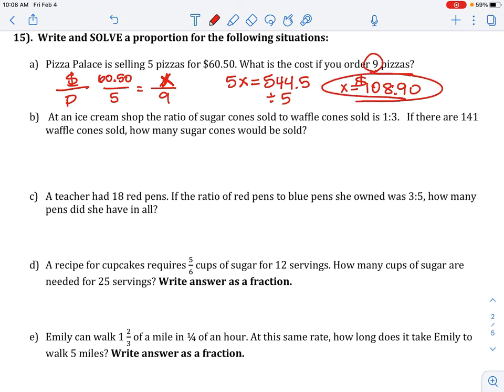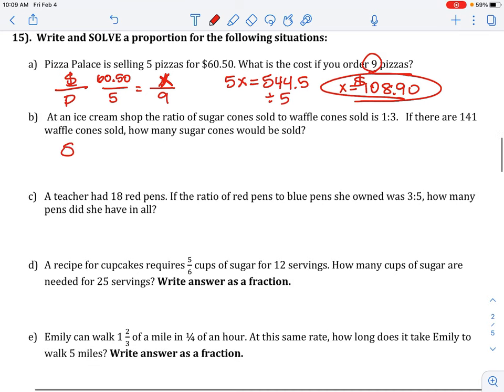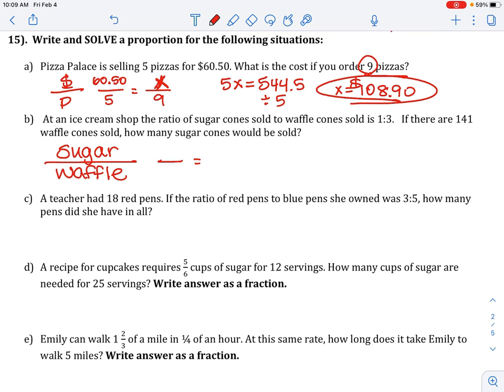B, at an ice cream shop, the ratio of sugar cones to waffle cones is 1 to 3. If there are 141 waffle cones sold, how many sugar cones would be sold? So let's compare sugar to waffle. And then set up our proportion.